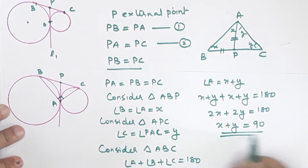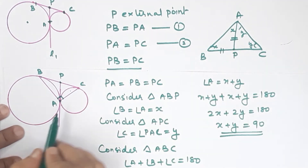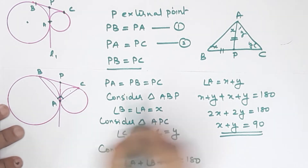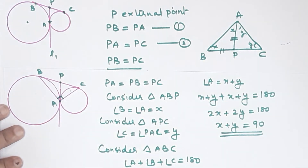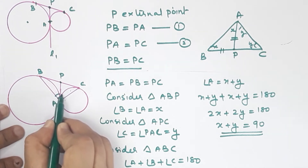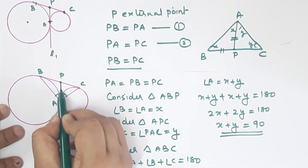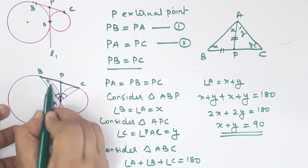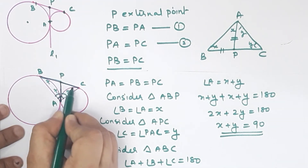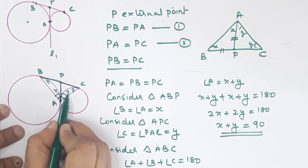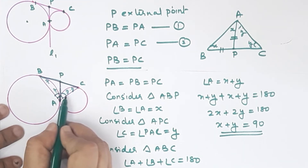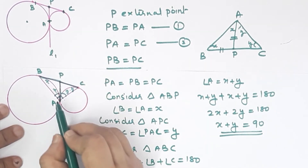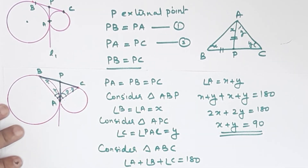We've proved that x plus y equals 90 degrees. Since angle A is split into x and y, and x plus y equals 90 degrees, the angle at the contact point is 90 degrees. That completes the proof.